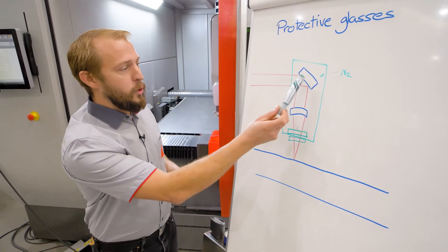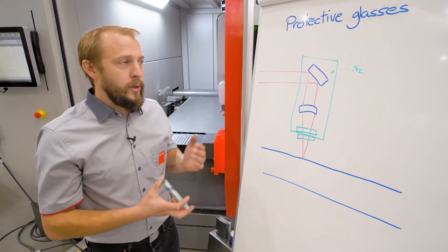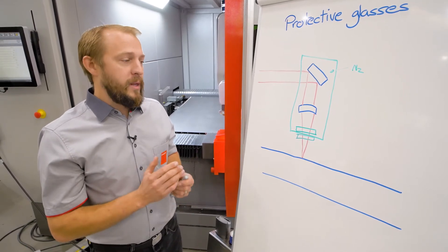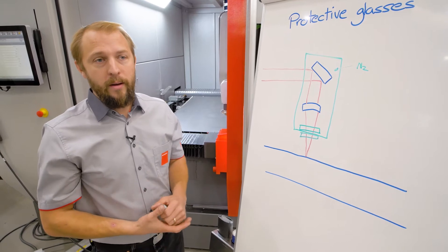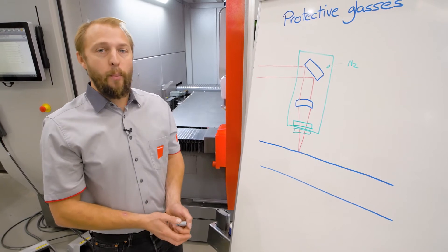Of course, all the optical components in this cutting head are monitored and controlled. As soon as there is any contamination on them, we will get a warning, or if it's too badly contaminated, we will get an error and the machine will stop cutting.